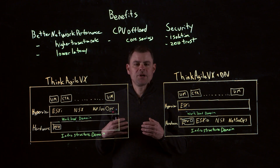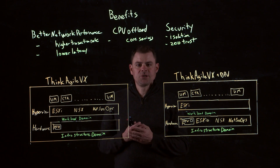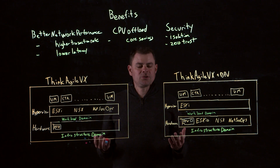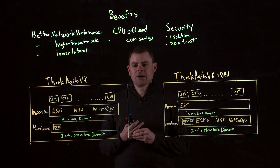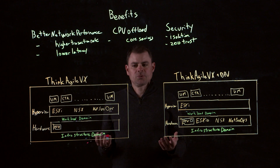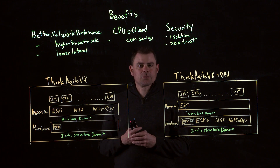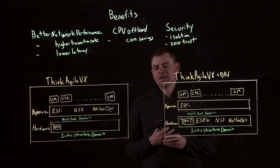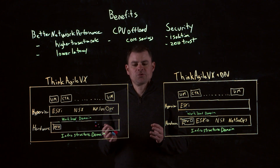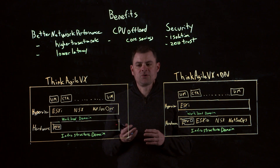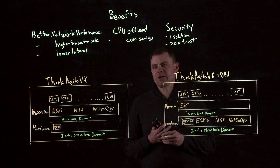We should probably talk about what is a DPU. A DPU is a data processing unit, very much like a GPU that offloads graphical and computational workloads. A DPU does that for data processing workloads, such as network traffic, network security, etc. Lenovo Think Agile VX has a turnkey solution to leverage the DPU to give you numerous benefits, which we will talk about.